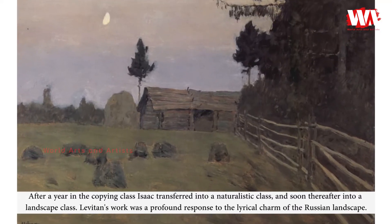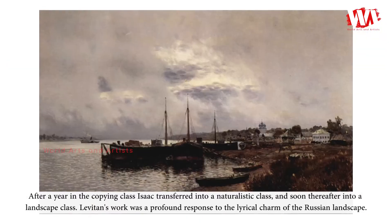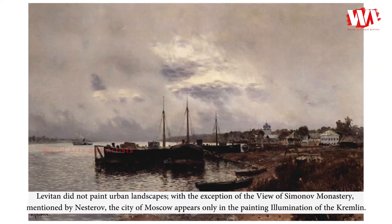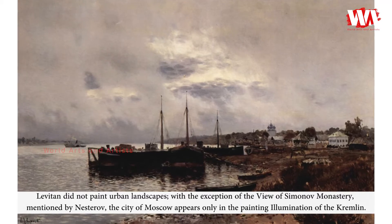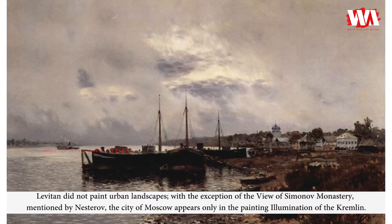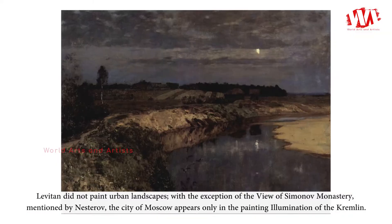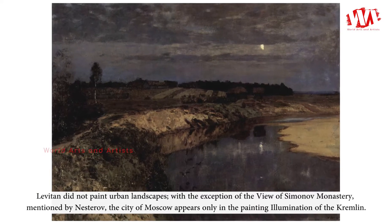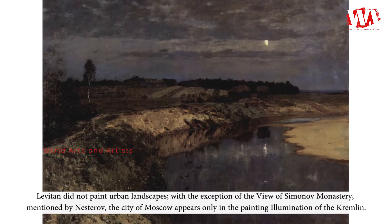Levitan's work was a profound response to the lyrical charm of the Russian landscape. Levitan did not paint urban landscapes, with the exception of the view of Simonov Monastery mentioned by Nesterov; the city of Moscow appears only in the painting Illumination of the Kremlin.